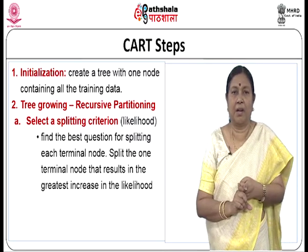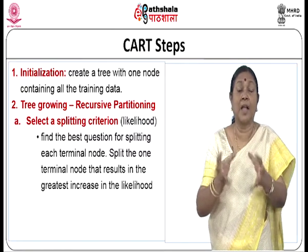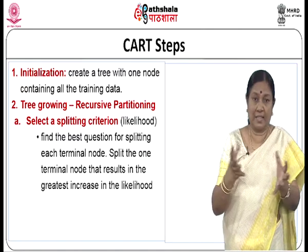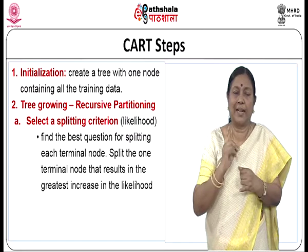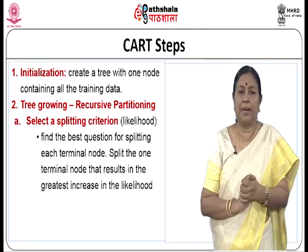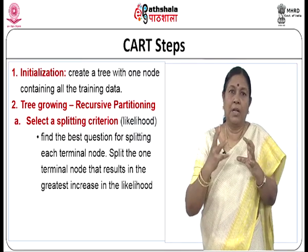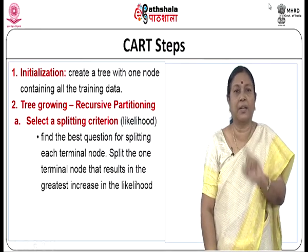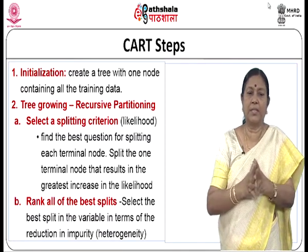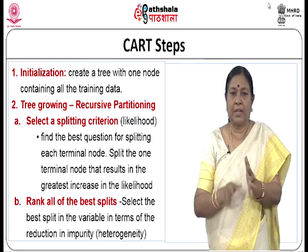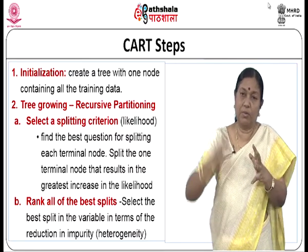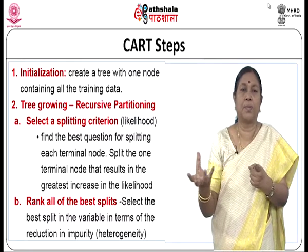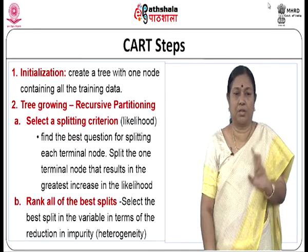For splitting, since CART is a statistical tree-modelling technique, you use likelihood. Find the best question for splitting each terminal node; split the terminal node that results in the greatest increase in likelihood. Then select the best split in terms of the reduction in impurity — rank all best splits and select the one where impurity is most reduced. Assign predicted classes to nodes according to the rule that minimizes misclassification cost.